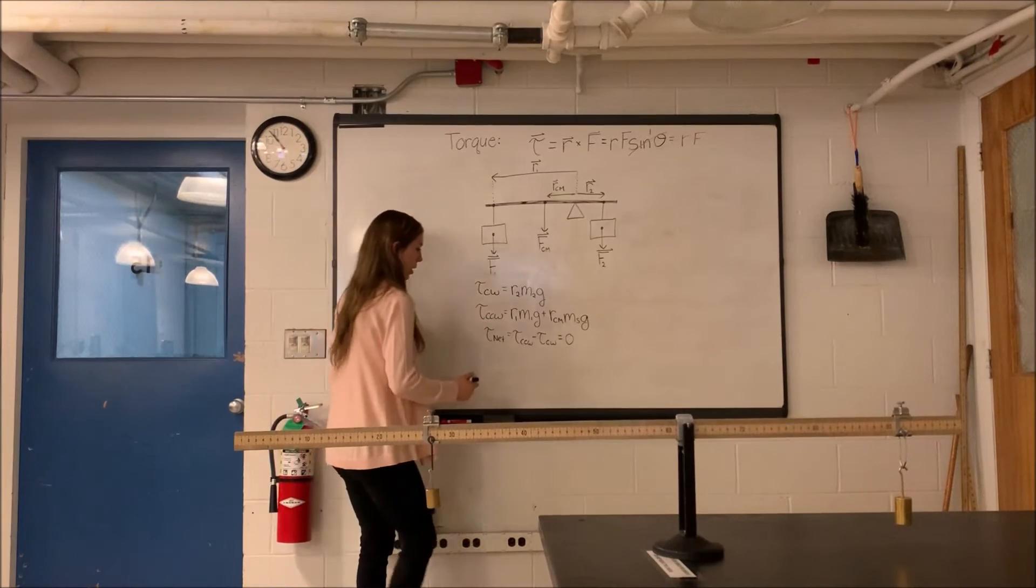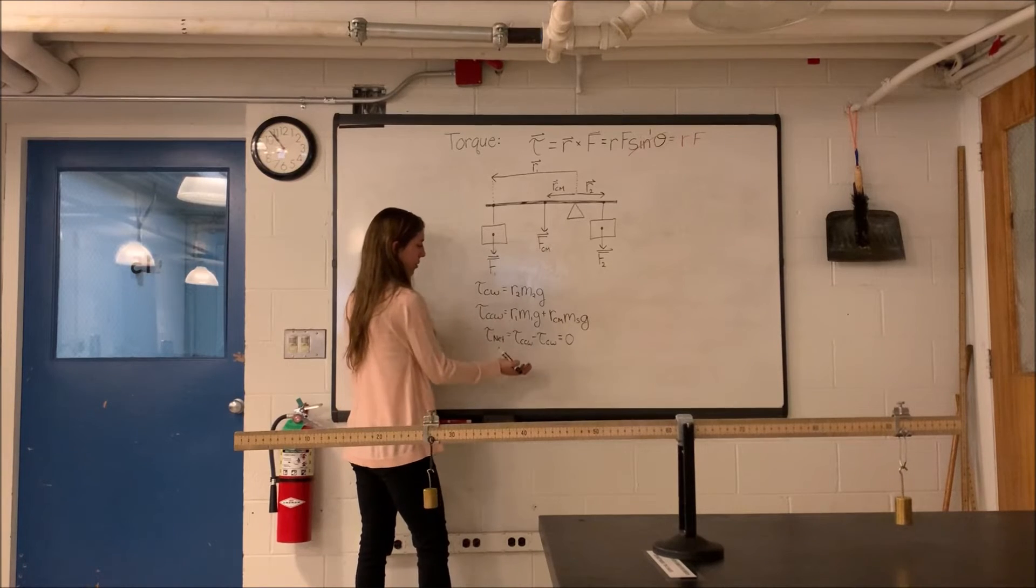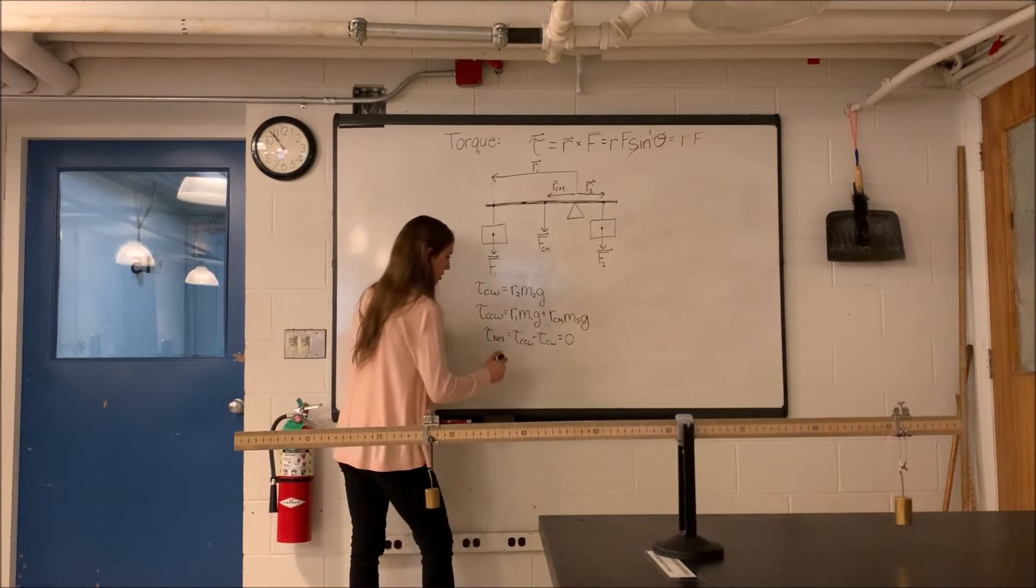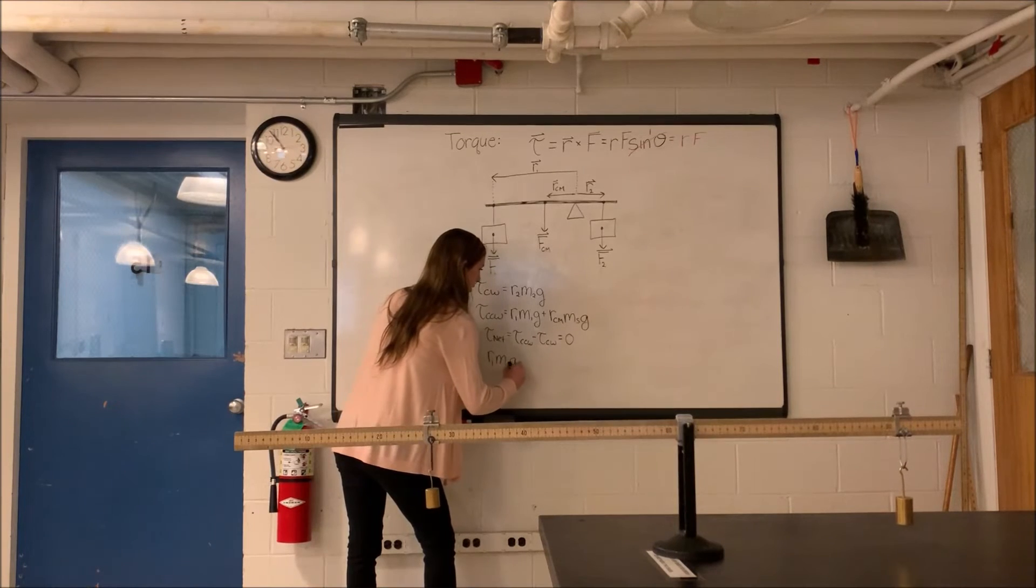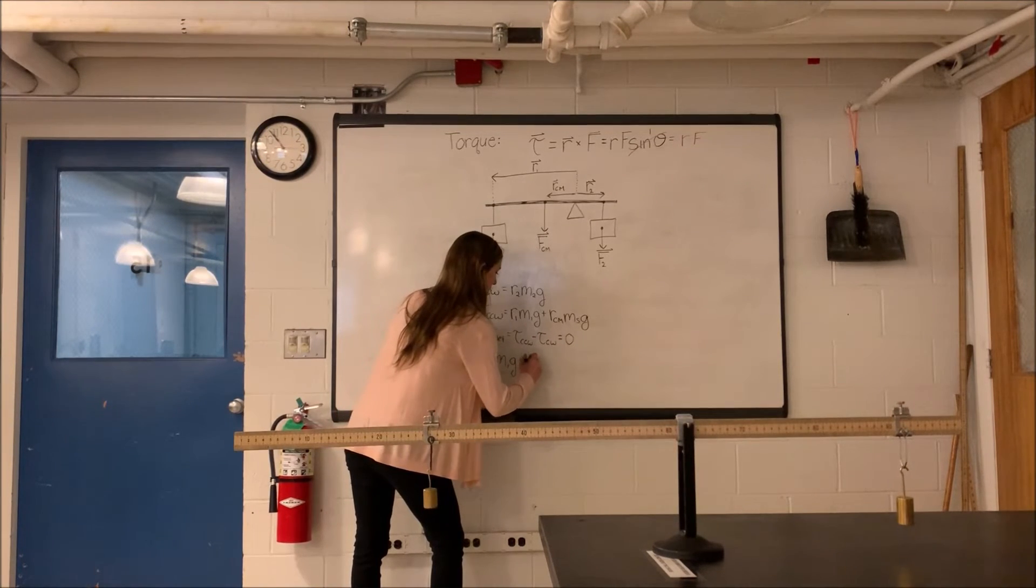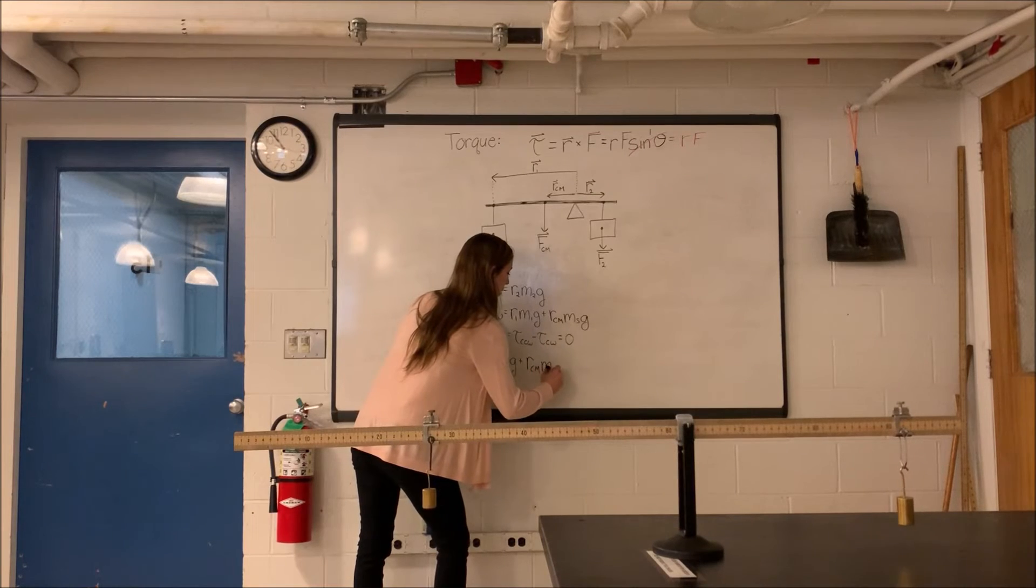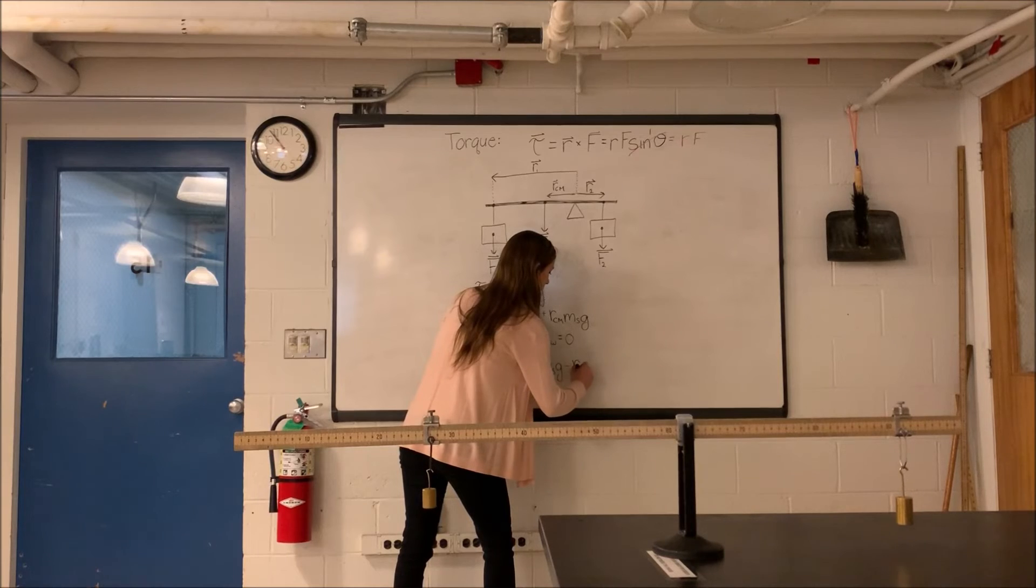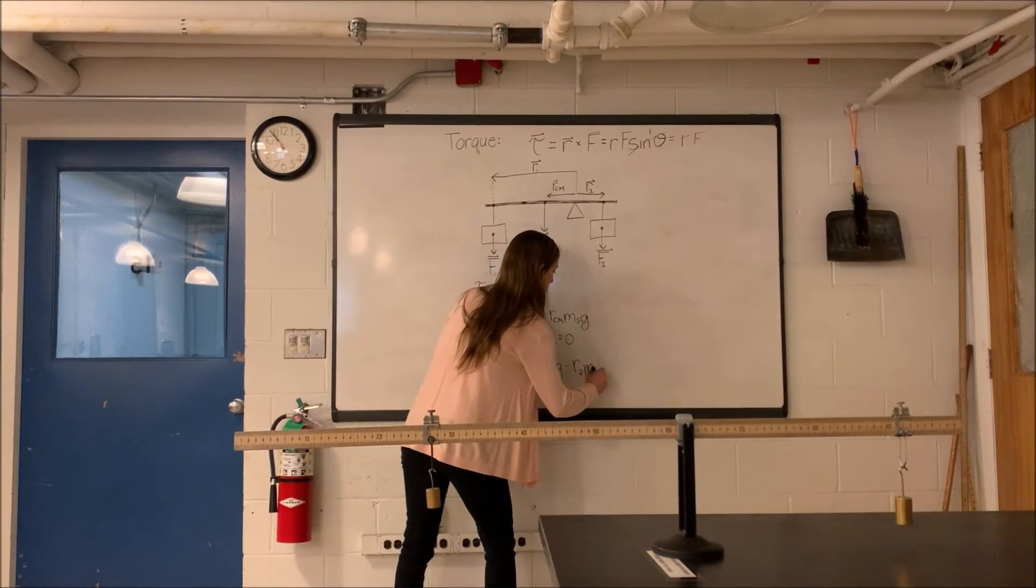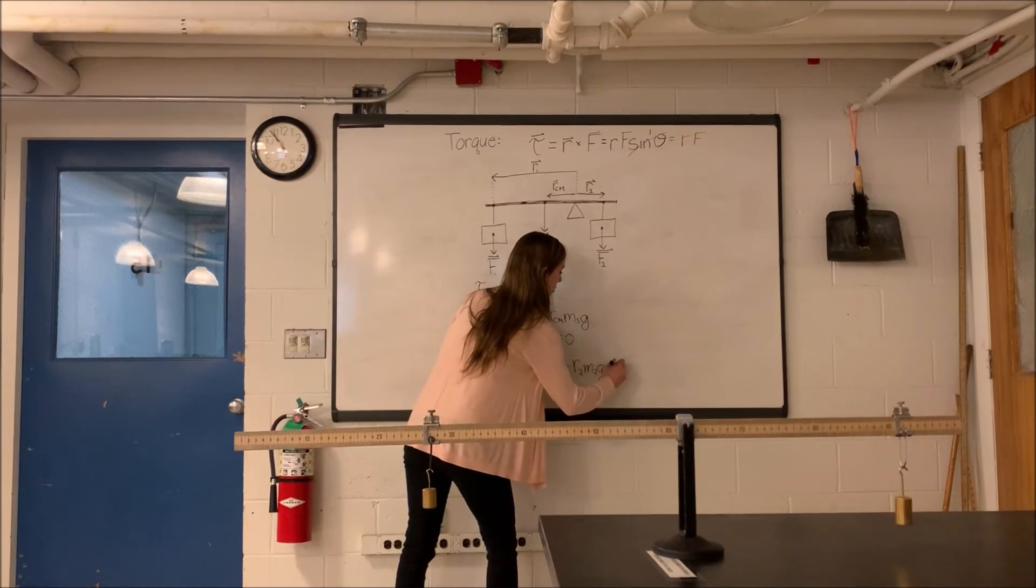So we'll write out what this equation looks like plugging in for counterclockwise and clockwise torques. So we have R1m1g plus rcm msg minus r2m2g equals zero.